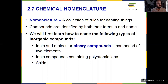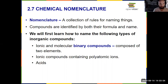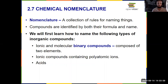The first things we are going to learn to name are ionic binary compounds, then polyatomic ions, then molecules and acids. So there are four sets of rules that you'll need to pay attention to throughout 2.7.